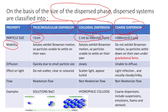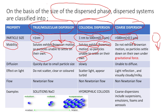Next is mobility. The particles present in true dispersion exhibit Brownian motion, so because of the Brownian motion, the particles may not settle at the bottom of the container. Particles present in colloidal dispersion also exhibit Brownian motion, so the particles may not settle at the bottom. But the particles present in coarse dispersion do not exhibit Brownian motion, so they can easily settle at the bottom of the container due to gravitational force.